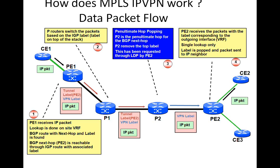CE1 sends an IP packet to PE1, and you can see below that the first process that happens is that you associate it with a particular VPN based on the interface on which you got the packet. Then you're going to encapsulate it with a VPN label, which is going to uniquely identify the customer. One of the requirements is that you have an LSP built from the ingress to the egress, so from PE1 to PE2, you have an LSP that is built.